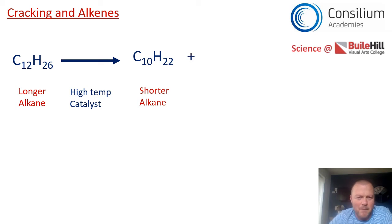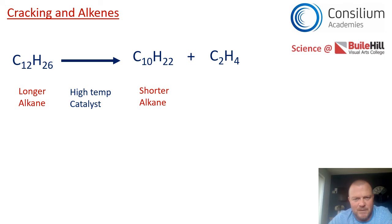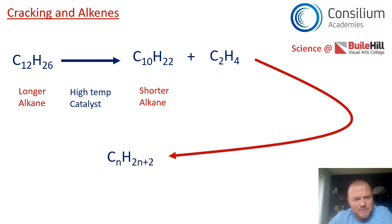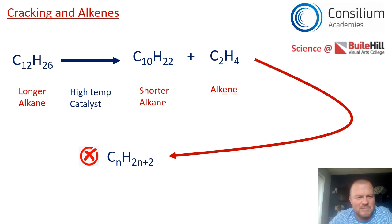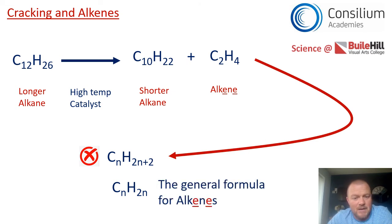So cracking also produces a small molecule: C2H4. Now, C2H4 doesn't fit the alkane pattern CnH2n+2 — it's not 2×2+2. Instead it fits the pattern CnH2n — you just double the number — and so it is an alkene. I've been underlining the double-e in 'alkene' for a reason: the general formula for alkenes is CnH2n, meaning you just double the number of carbons.